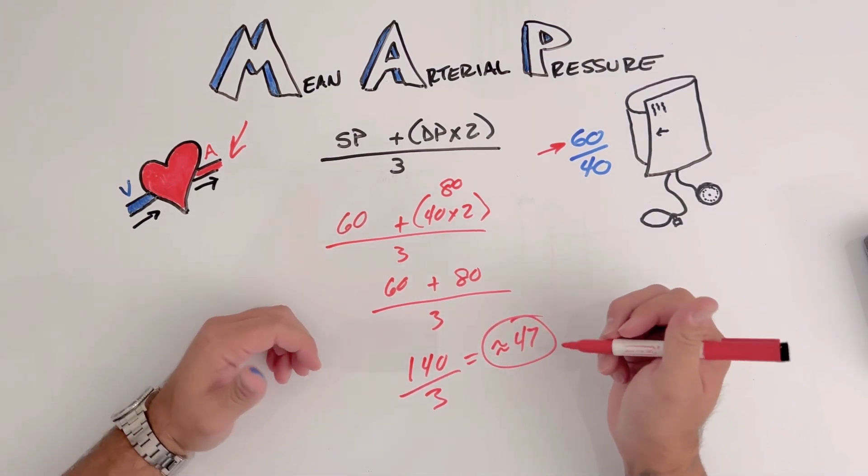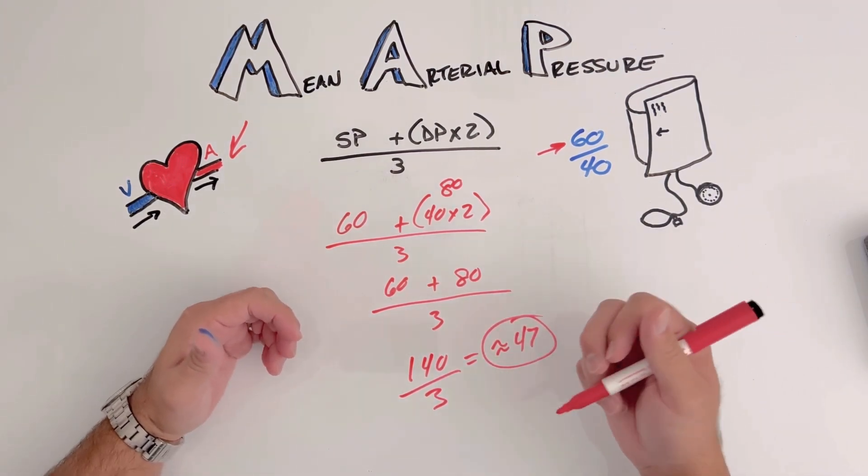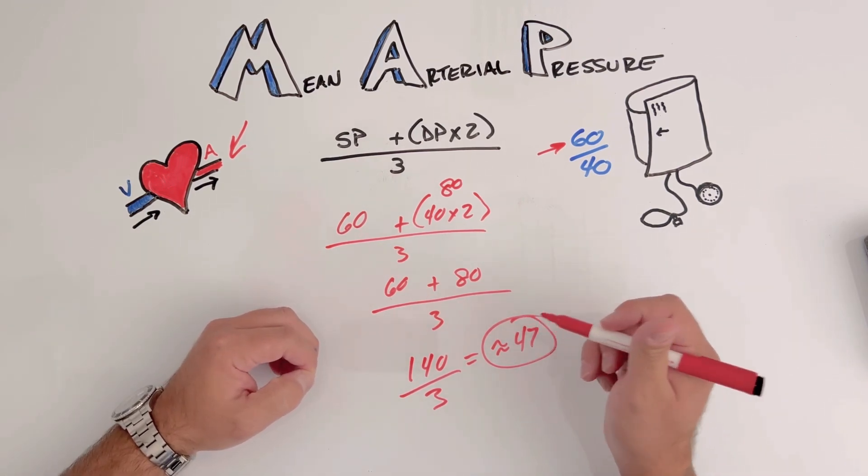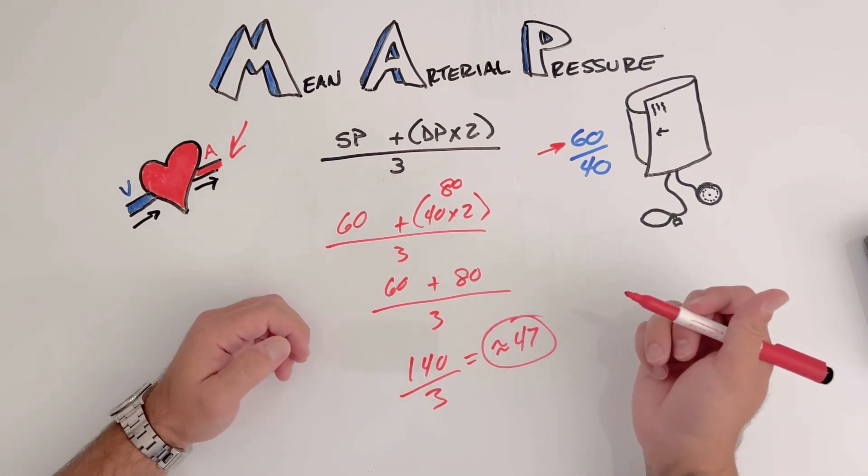Not perfusing appropriately. Maybe this is the patient that we need to give lactated ringers or saline bolus to, and maybe consider a pressor down the road so we're adequately perfusing.